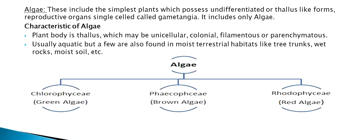First is algae. These include the simplest plants which possess undifferentiated or thallus-like forms, reproductive organs as single cells called gametangia. Plant body is thallus which may be unicellular, colonial, filamentous or parenchymatous. Usually aquatic, but a few are also found in moist terrestrial habitats like tree trunks, wet rocks, moist soil and many more.